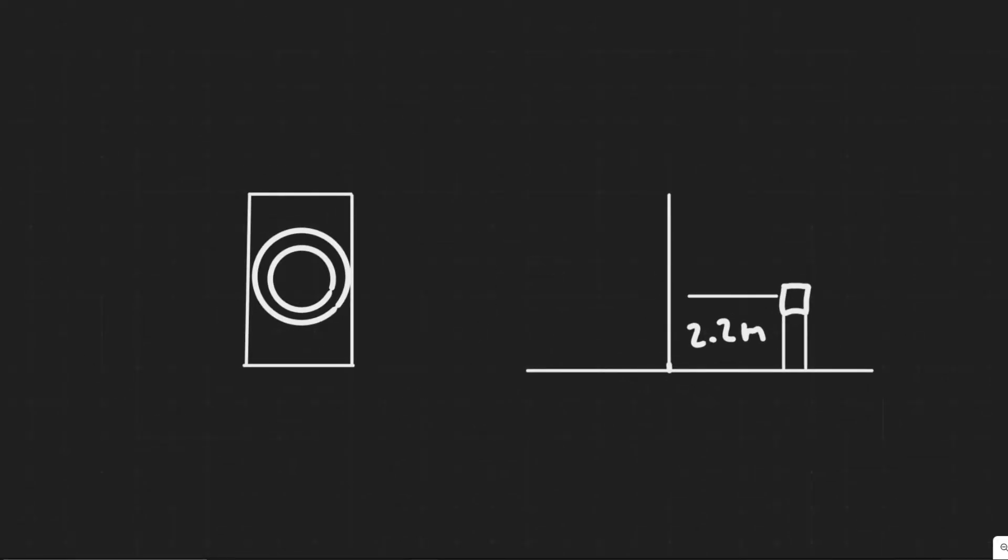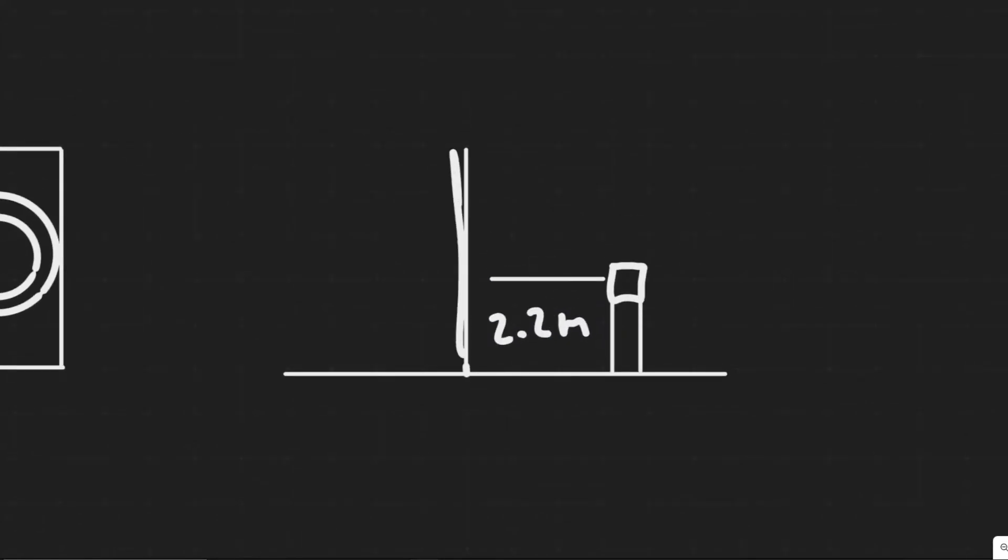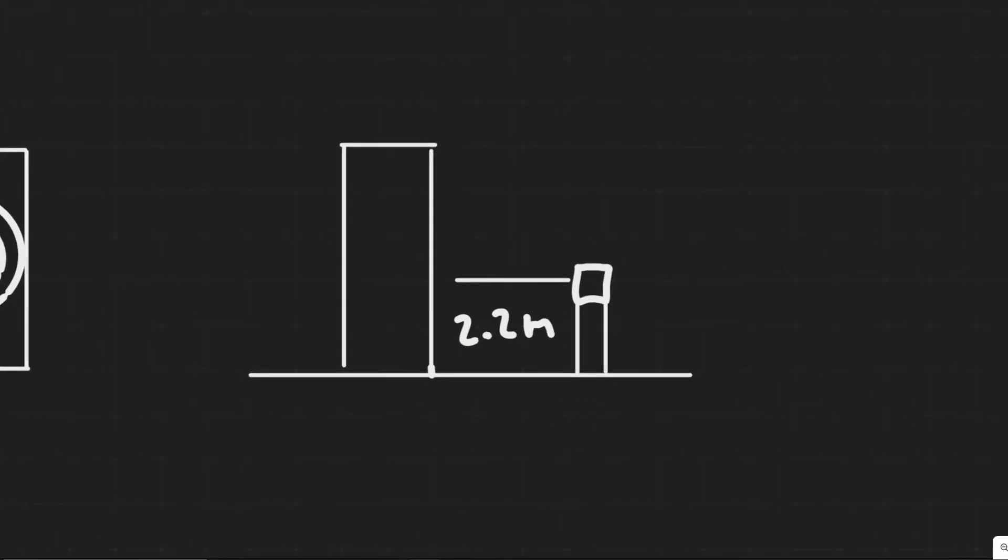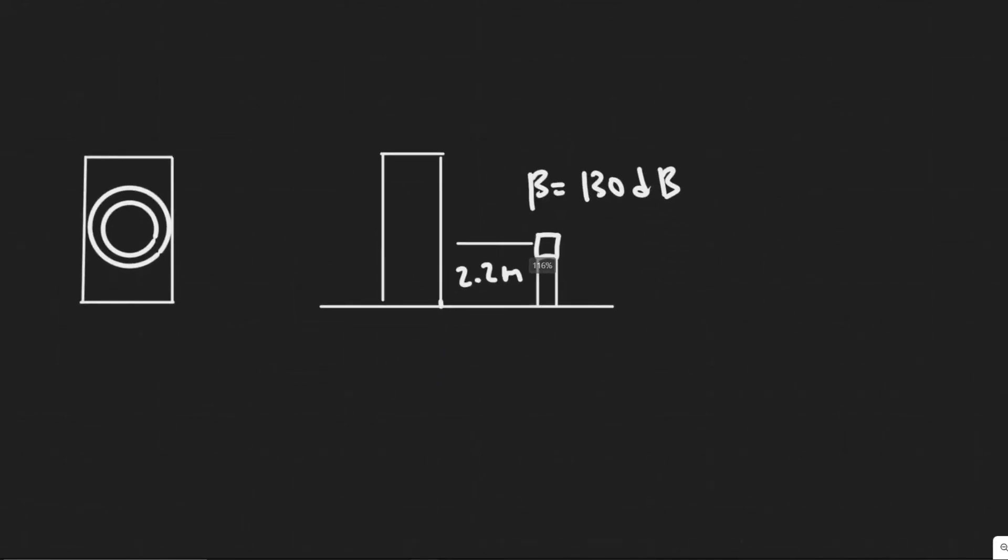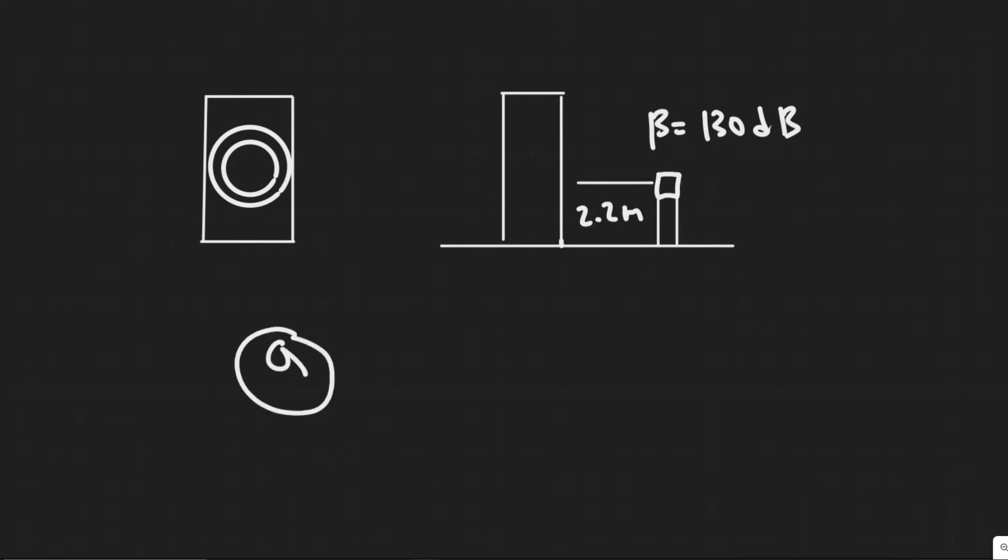So imagine this right here is our speaker. This is the front view. If we look at it from the side view, you can imagine this right here is your speaker. So it actually would be like this in 3D. We can imagine we're looking at it from the side. The front of it would be the decibel meter. We know it's going to be 2.2 meters away. And at this point, it's going to register a sound equal to 130 decibels. So this is the information we're given. And we know the speaker, the sound wave is going to spread out in all directions around it.